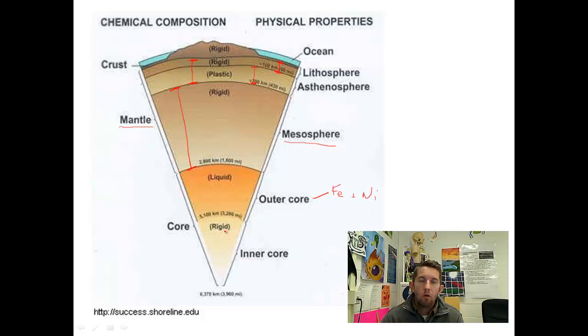We move into the inner core. Pressures are so great that that iron and nickel is solidified. So, just a quick review. We've got the crust. Lithospheric plates are up here. The asthenosphere. Mesosphere is the lower part of the mantle. The outer core and the inner core.